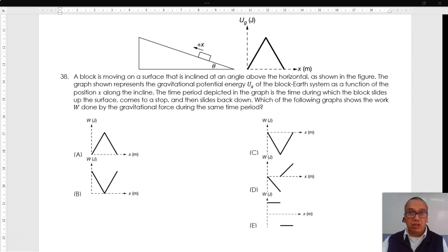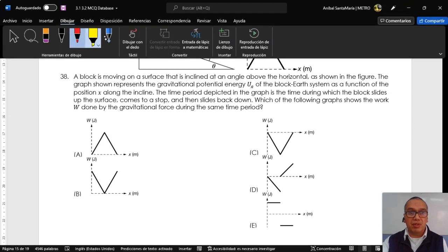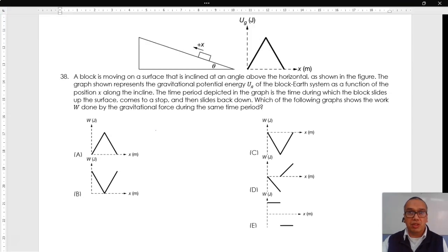One way to look at this situation is to think about the definition of the gravitational potential energy, which is the negative of the work done by gravity.